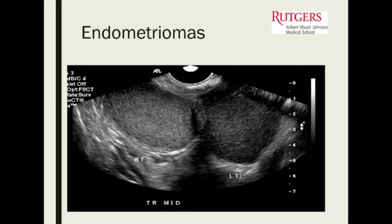An endometrioma, on ultrasound, shows the ovary with a homogenous texture. If they get large enough we can actually see them. When we have a finding like this in a patient who meets clinical criteria for endometriosis, we start to think whether this is an endometrioma and whether she should be surgically operated on. When these get large enough, we tend to operate.